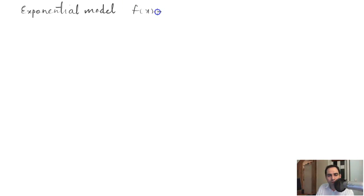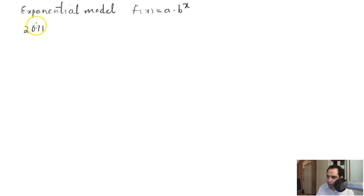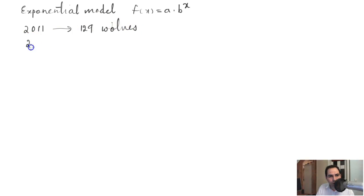Because it's an exponential model, it's going to be in the form f(x) = a × b^x. In 2011, 129 wolves were counted, and by 2013 the population had reached 236 wolves.